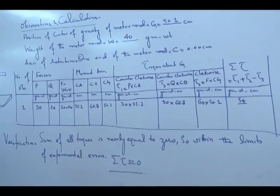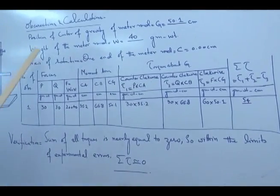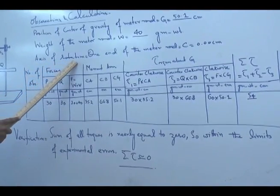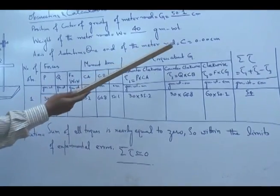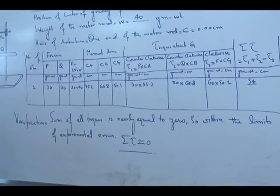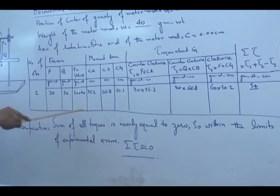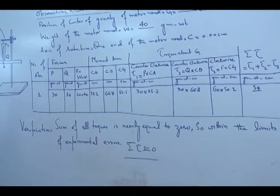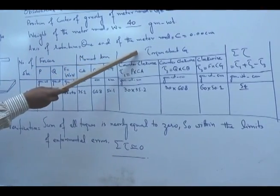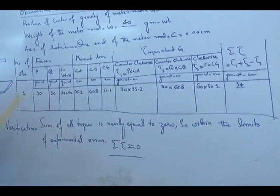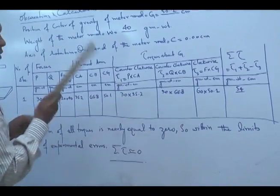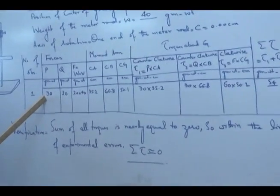When we balanced the meter rod without an external weight, the weight of the meter rod was approximately 40 gram weight. For measurement of torque we need the axis of rotation — one end of the meter rod, point C, which is at 0.00 cm. In order to verify the conditions of equilibrium we need three observations, so I am taking just one observation for convenience. This table represents the forces acting on the meter rod, their moments and torques. Our first force P was 30 gram weight acting on S1.